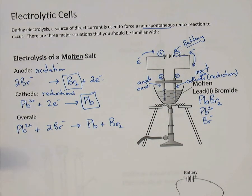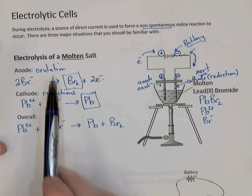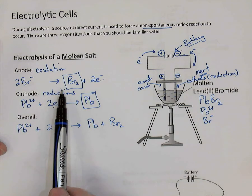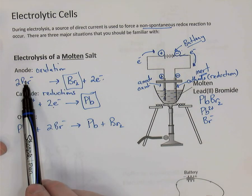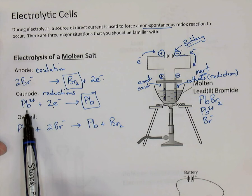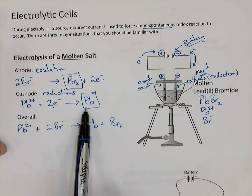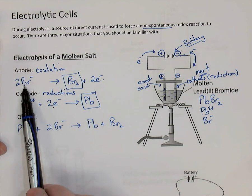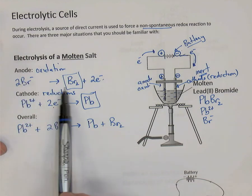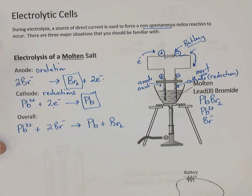The electrolysis of a molten salt is relatively easy because a salt is made of just a cation and an anion. The cation goes to the cathode where it's reduced, and the anion goes to the anode where it is oxidized. That's the simple picture.